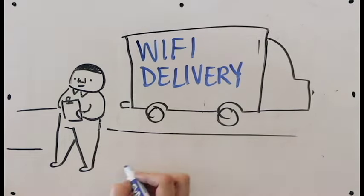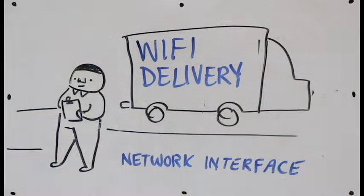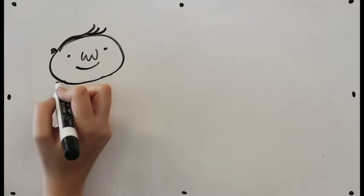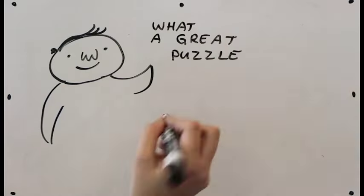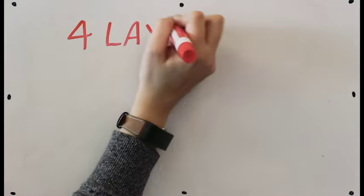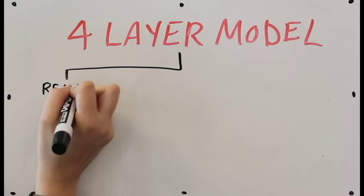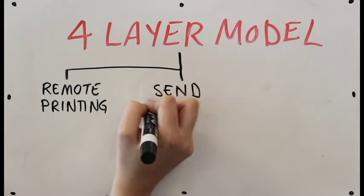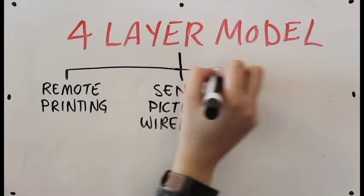Once the truck delivers the packets, your friend receives each puzzle piece and reassembles it in order to see the final picture. The four-layer model is being used constantly whenever you're on the internet. It allows you to print remotely, share images with friends, and so much more.